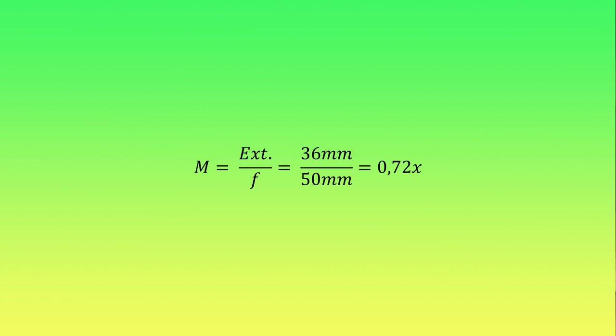Now, if I set my lens to infinity and had a 36 mm extension tube between the camera and the lens, the additional extension will be 36 mm, and the magnification will be M equals 36 divided by 50 equals 0.72X.